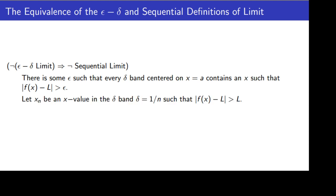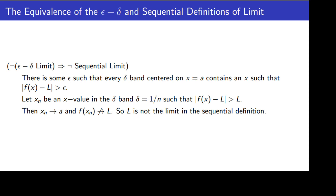So we pick that epsilon and we know every delta will not work — that is, for every delta there will be some point where f of x is too far away from L. We pick a sequence of points: let the nth element in the sequence be an x value in the delta band where delta equals 1 over N, and we pick that point so that the absolute value of f of x minus L is greater than epsilon. Note there is a typo in that slide; that second L should be an epsilon. Now, x sub n converges to A because x sub n is going to be less than 1 over N away from A, and since n gets larger, 1 over N gets smaller, so this sequence converges to A.